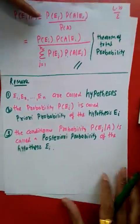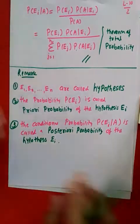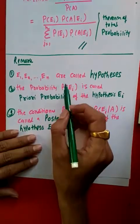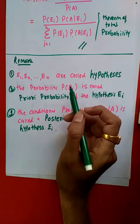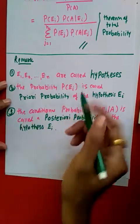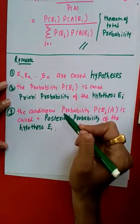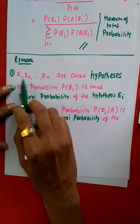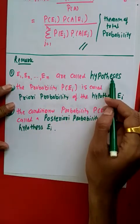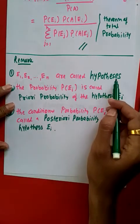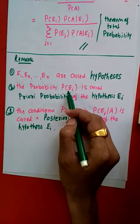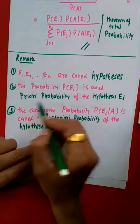One more thing — कुछ remarks हैं, तीन points हैं जो याद रखने हैं. These same terms will be used in engineering and research later. The events E1, E2, ..., En that we have taken are called hypotheses. The probability P(Ei) is called the prior probability of the hypothesis Ei.